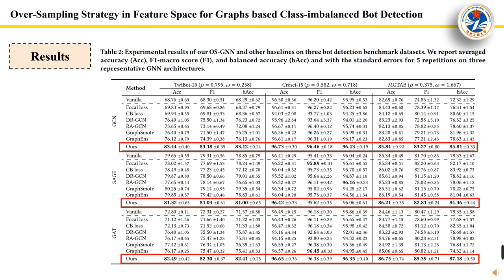We conducted experiments on three machine account detection datasets with graph structures: CRESI-15, MGTA-B, and TWIBET-20. The experimental results show that OSGNN significantly outperforms previous graph oversampling methods. By improving the classification accuracy of minority classes, OSGNN significantly increases the overall classification accuracy. On the TWIBET-20 dataset, the maximum improvement in classification accuracy is 7.32%.